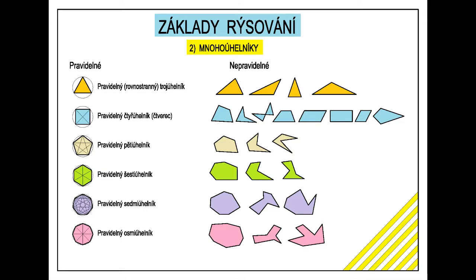Podle toho zda existuje spojnice vrcholů, která leží mimo obrazec. Pokud existuje taková spojnice, je mnohouhelník nekonvexný. Příklady mnohouhelníků si řádně prohledněte.